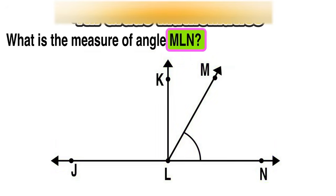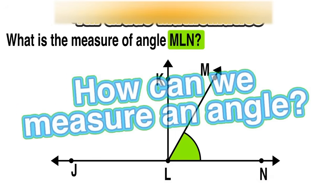The first thing that we want to do is identify that specific angle on the diagram. We see angle MLN is formed by the points M, L, and N with the vertex at point L.